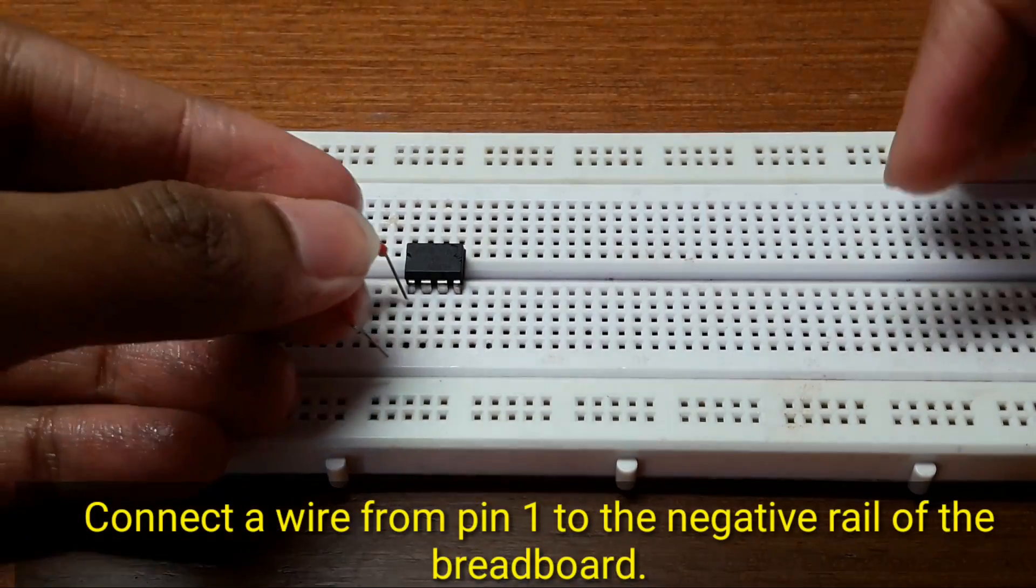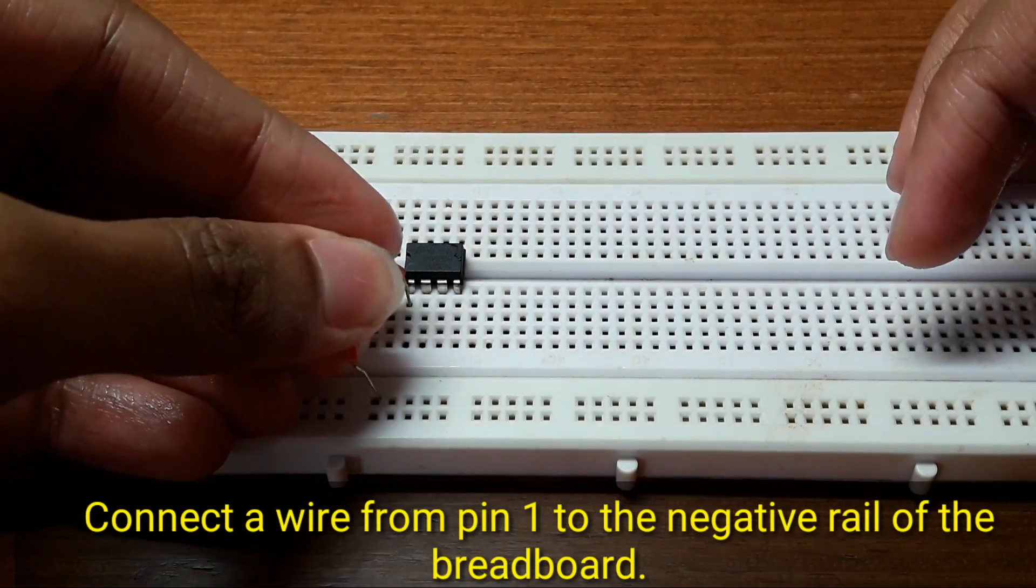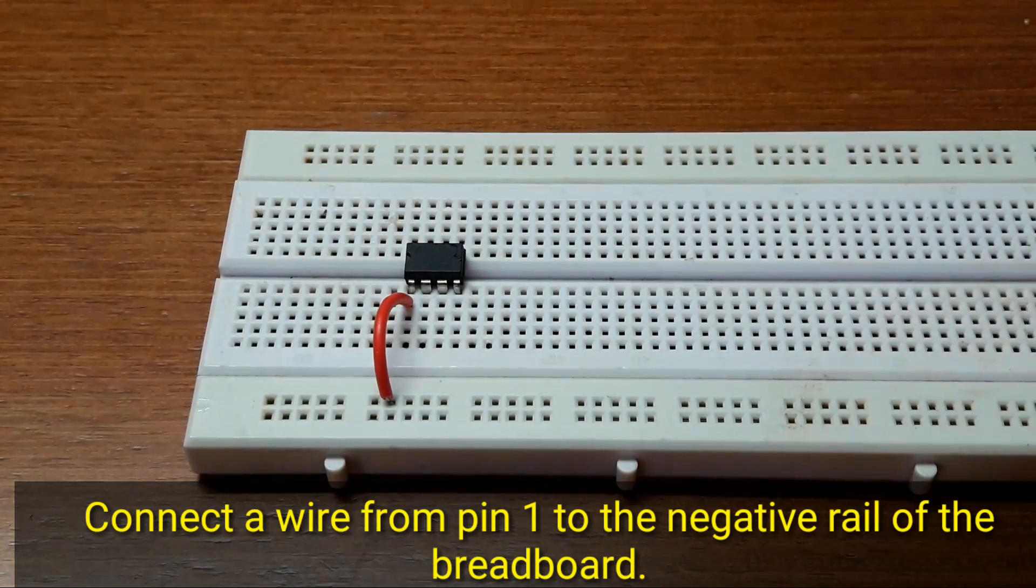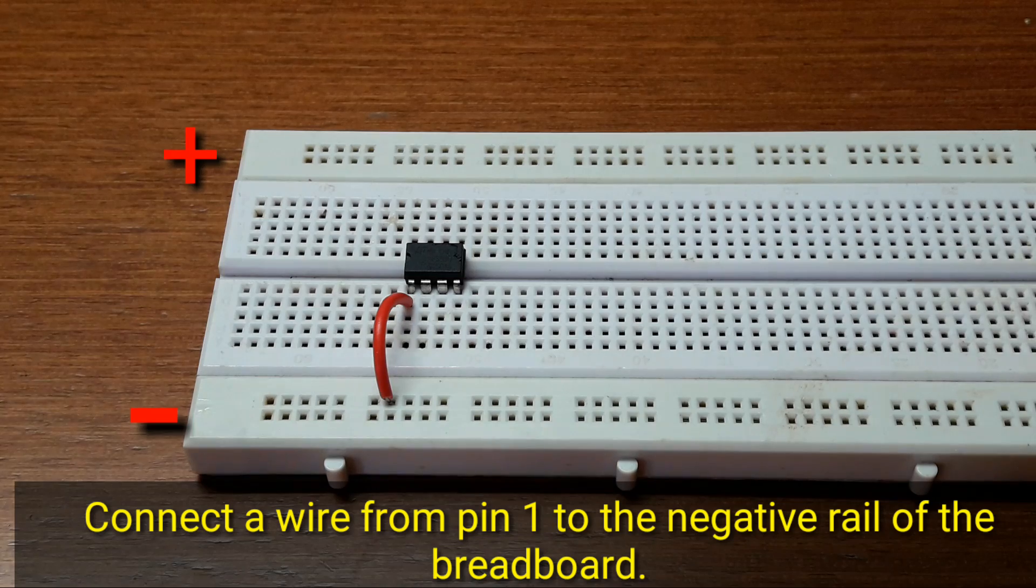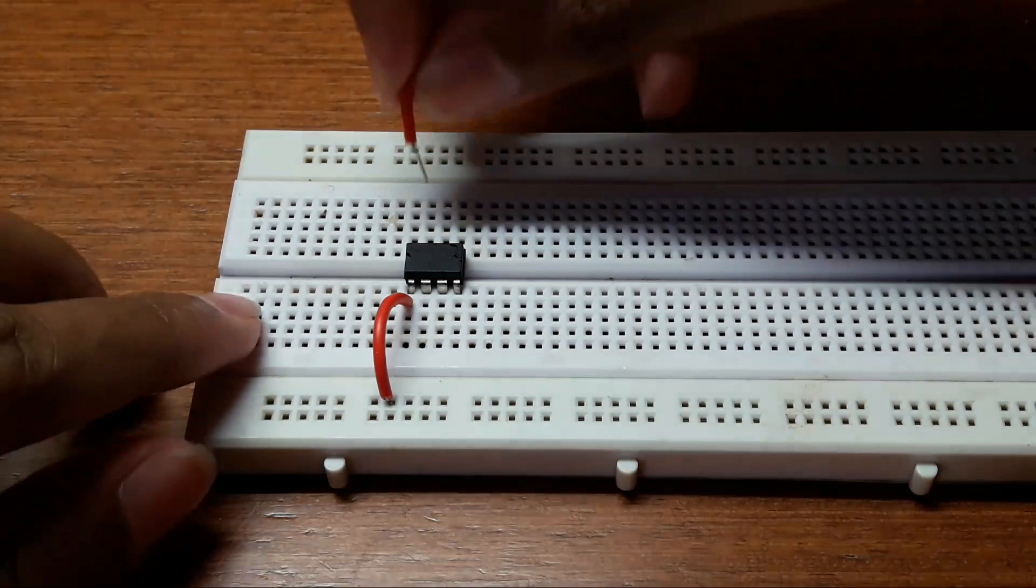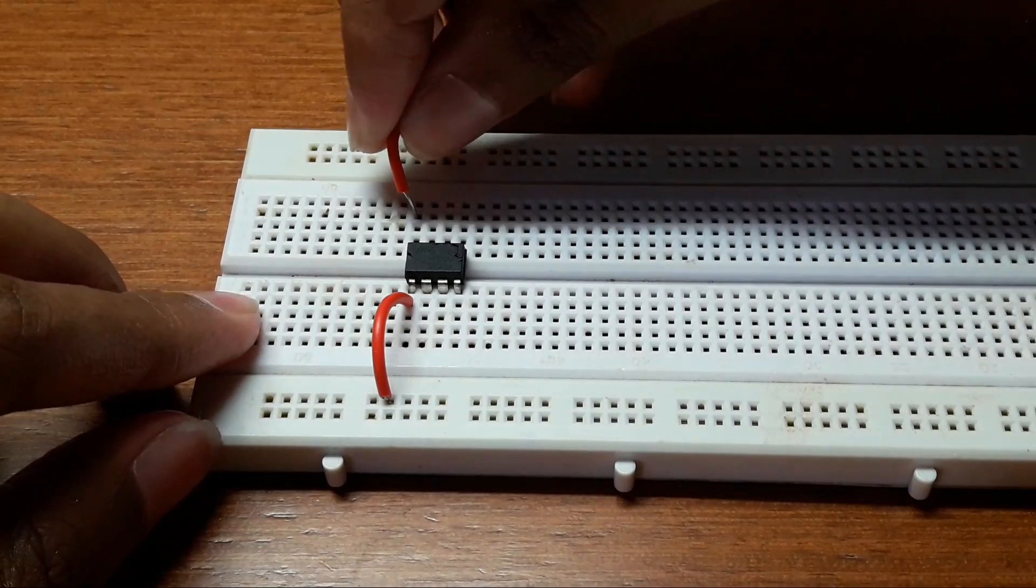Connect a wire from pin 1 of the 555 timer IC to the negative rail of the breadboard. And connect another wire from pin 8 of the 555 timer IC to the positive rail of the breadboard.